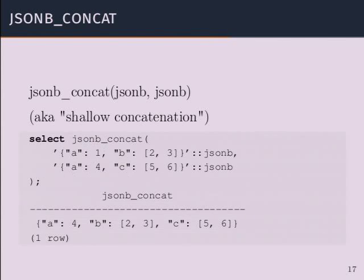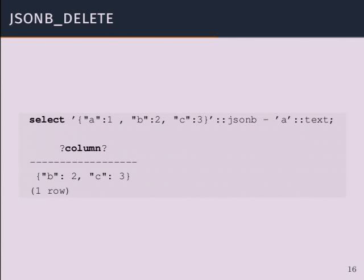To avoid any ambiguity, where you want to delete something with a path, instead of saying minus, you say minus-hash — the pound sign, octothorpe. That's because otherwise we run into ambiguity problems and you have to do nasty casts. Since we use a different operator name, you can just pass it in an array literal with a path. So this cast here is in fact unnecessary.